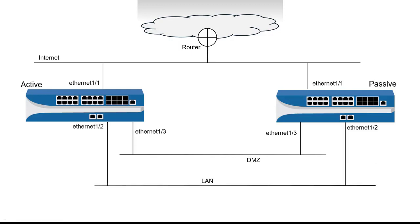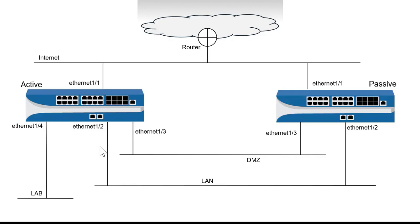I've got Ethernet 2 connected to my LAN switches, so these are my production networks: Ethernet 1, 2, and 3. But I also have a test lab, and I've only connected the lab switch to my active firewall on Ethernet 1.4. It isn't a production network, so I don't really need to worry about the lab being 100% redundant. I haven't connected it to the passive firewall — just a single connection from a single switch in the lab environment to Ethernet 1.4 on my active firewall.